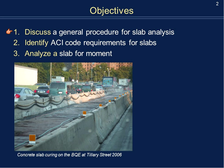Going back to our objectives: we discussed the general procedure for slab analysis, which is essentially the same as for a beam — the only difference is we look at a 12-inch width. We identified the ACI code regulations specific to slabs, including thickness, rebar spacing, and effective depth. And we analyzed two slabs for moment. Thank you, and if you have any questions please let me know.